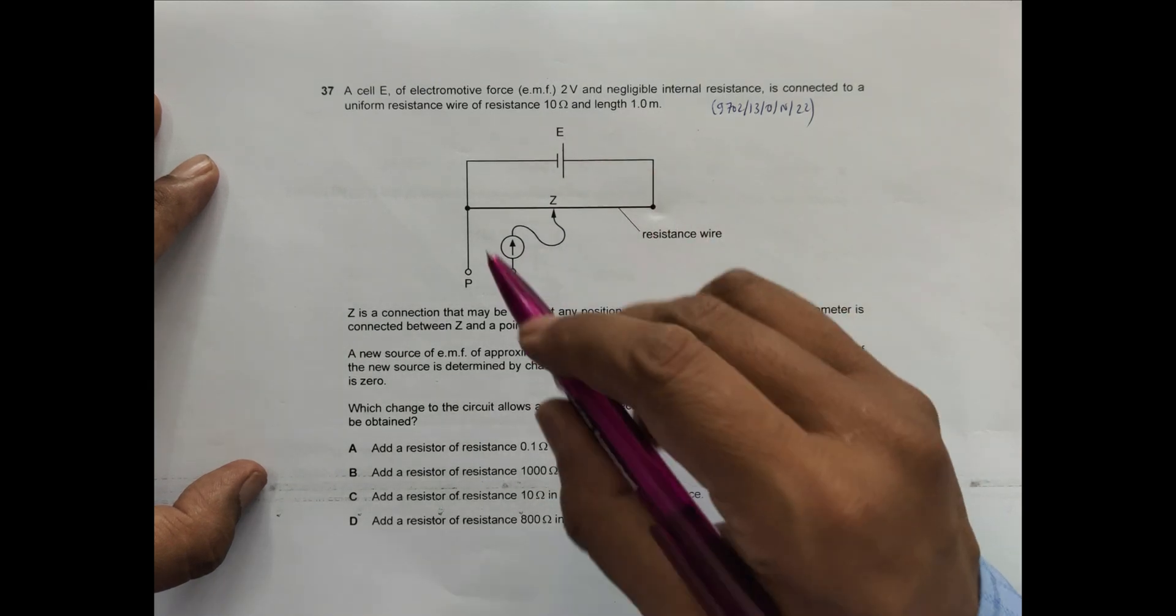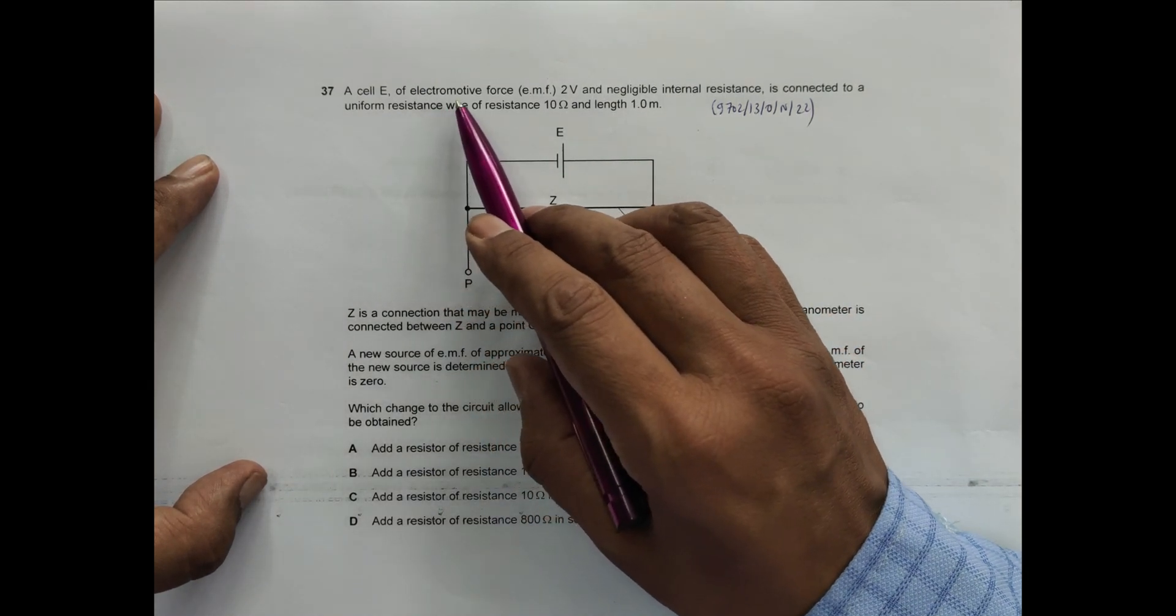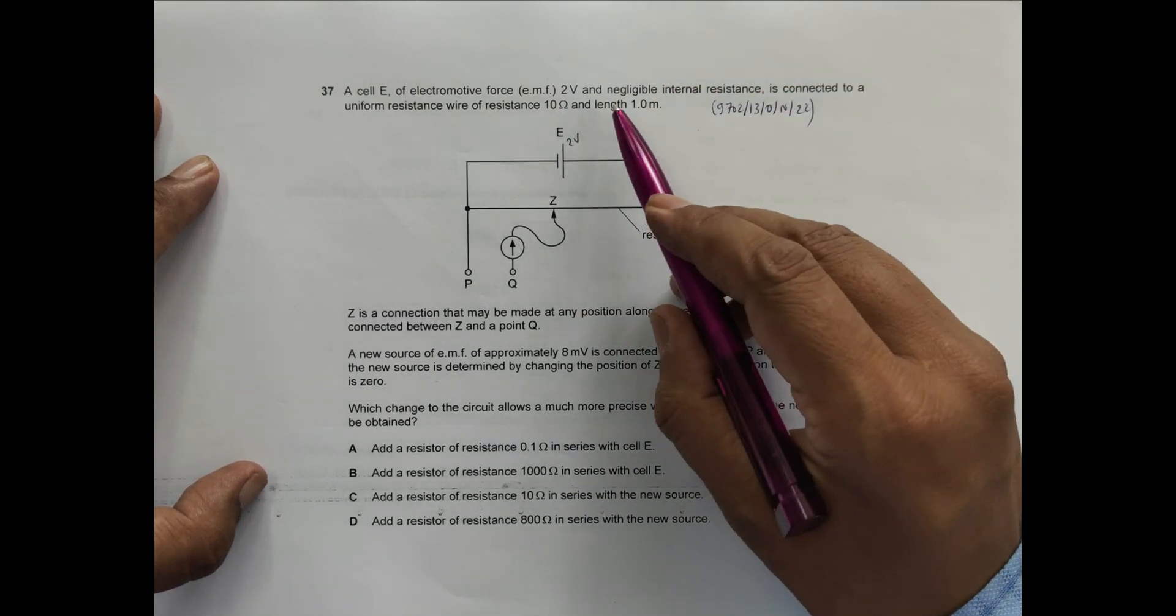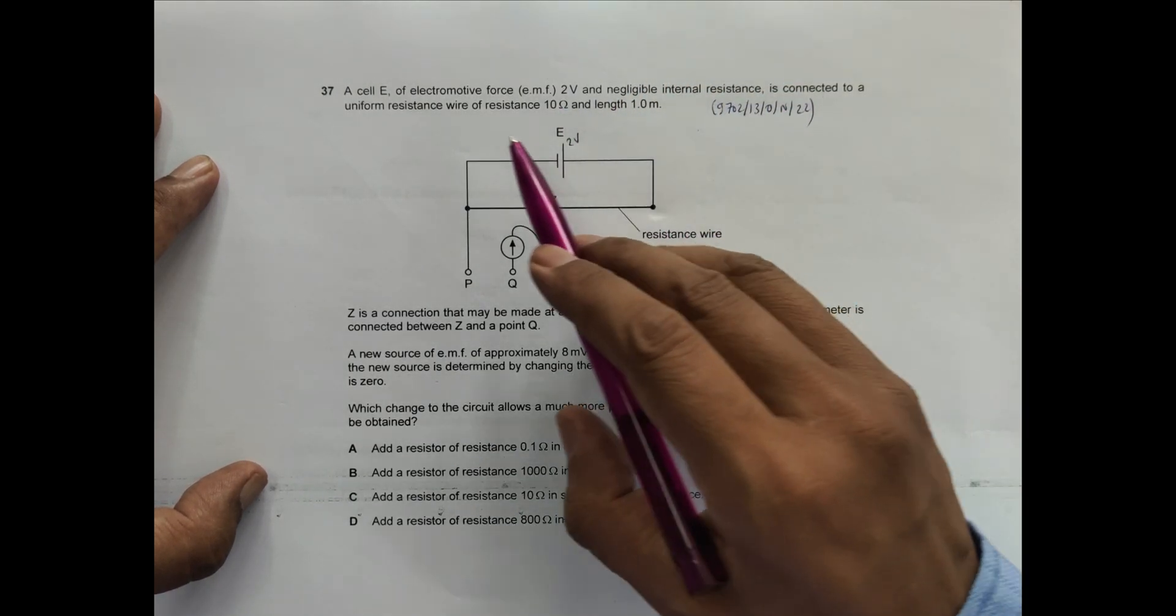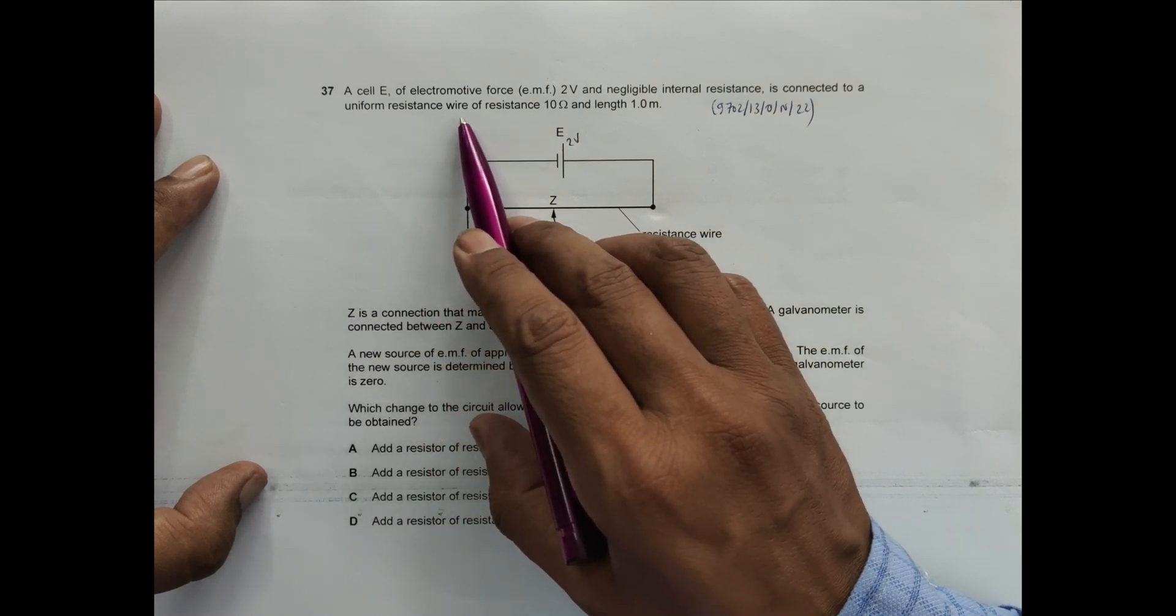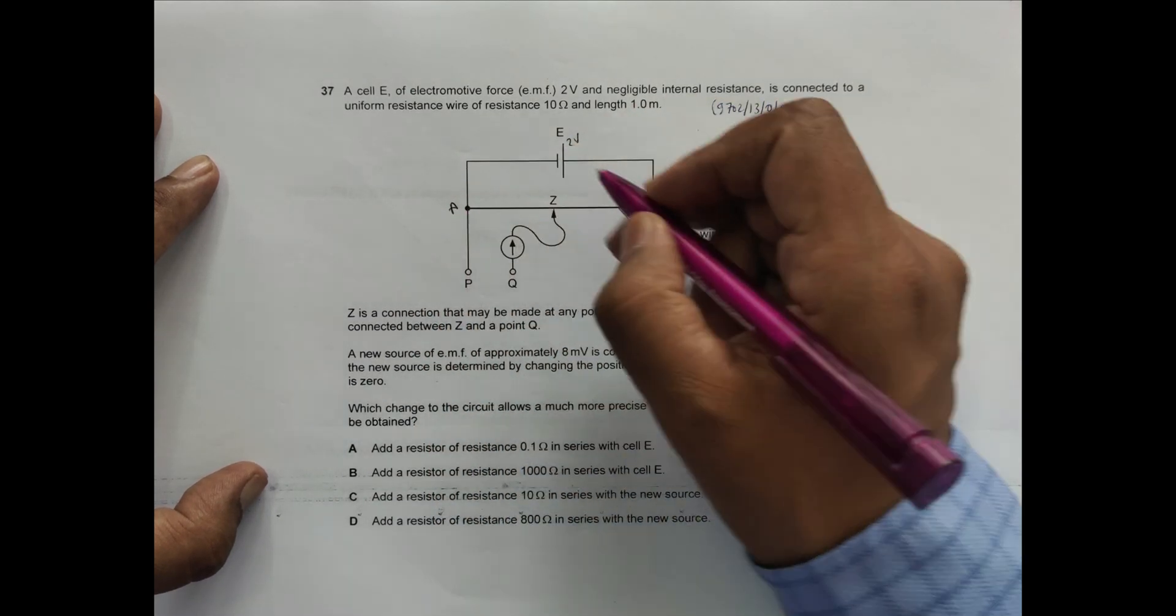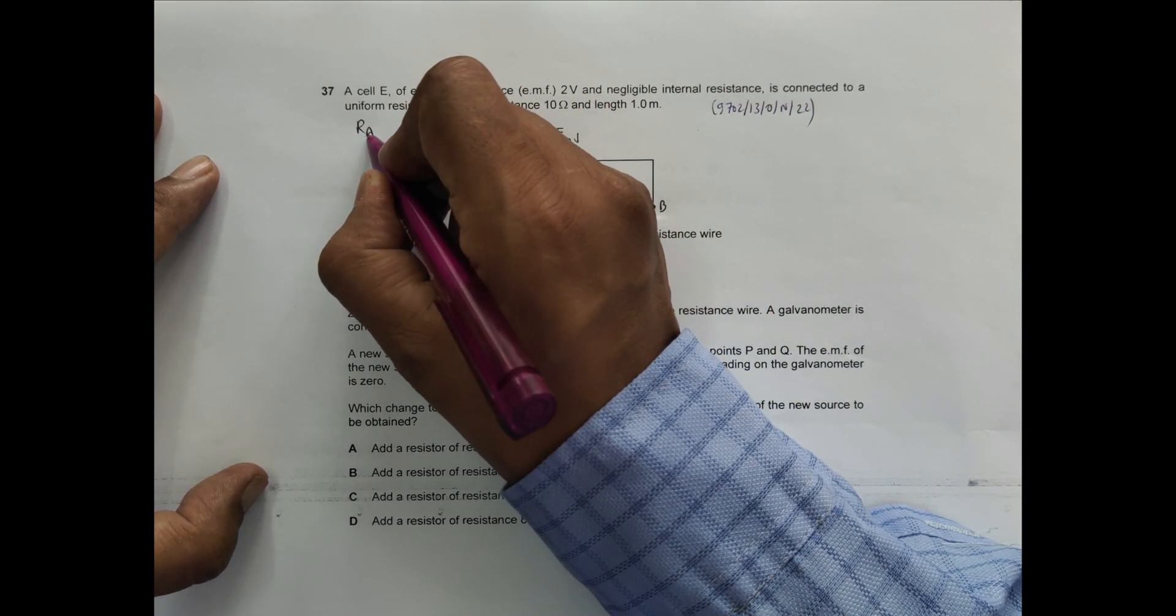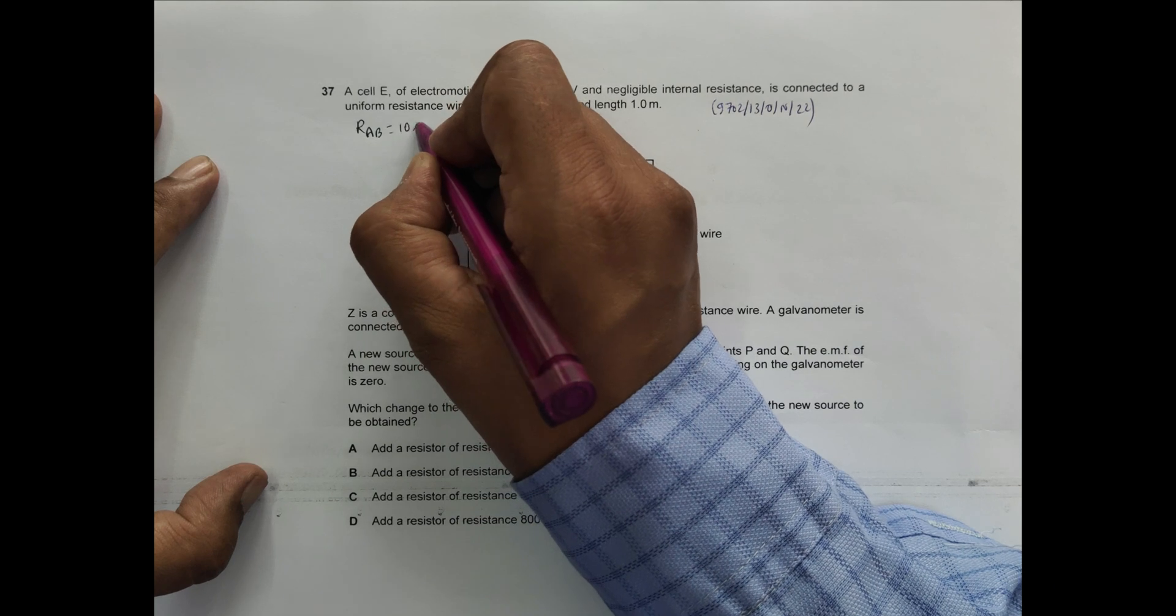We can see here an arrangement of a potentiometer. A cell E of electromotive force 2 volts with negligible internal resistance is connected to a uniform wire of resistance 10 ohms. If I name it as AB, then RAB equals 10 ohms.